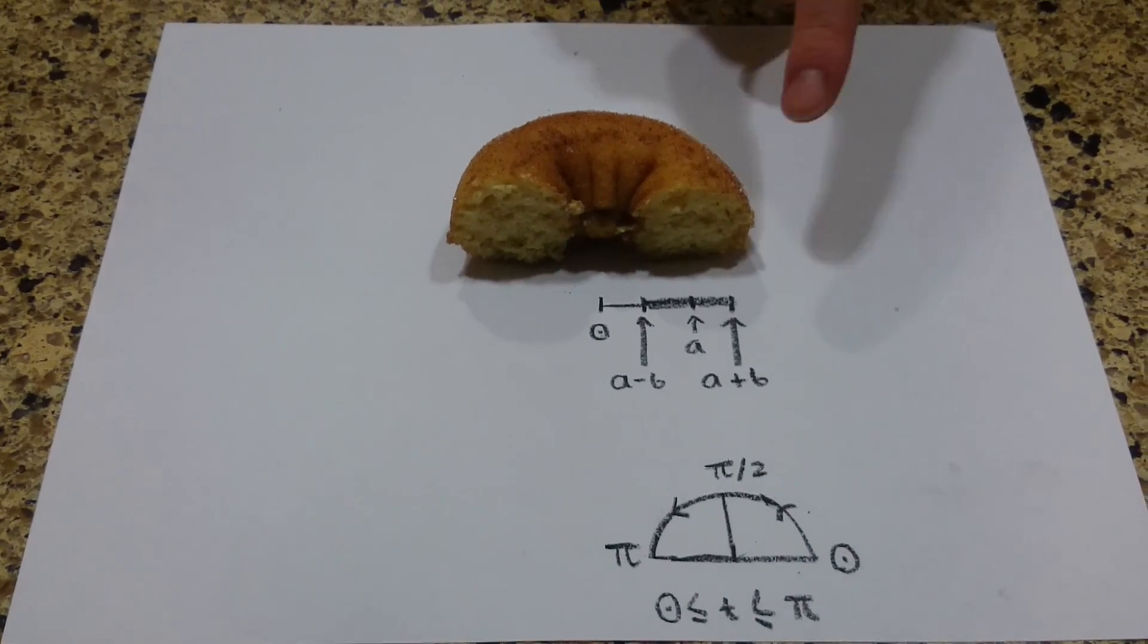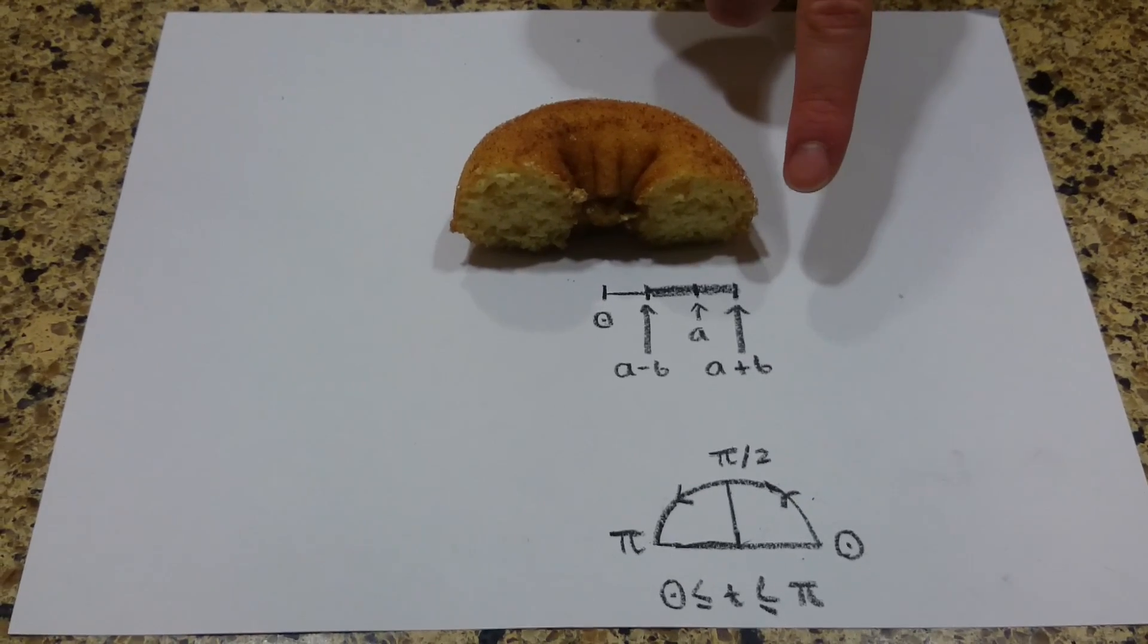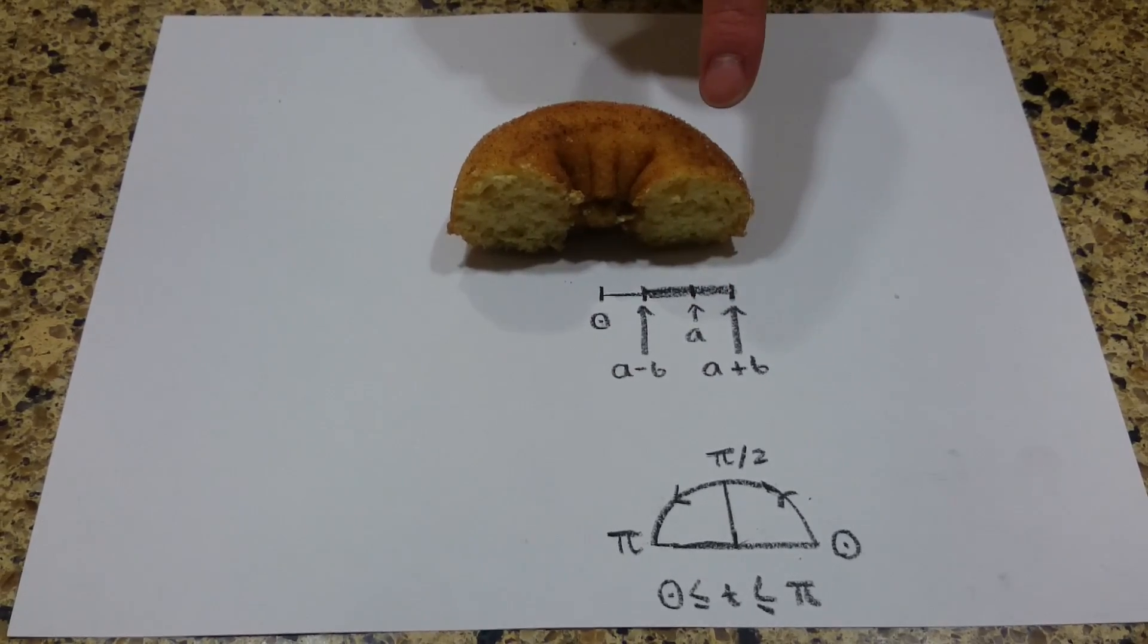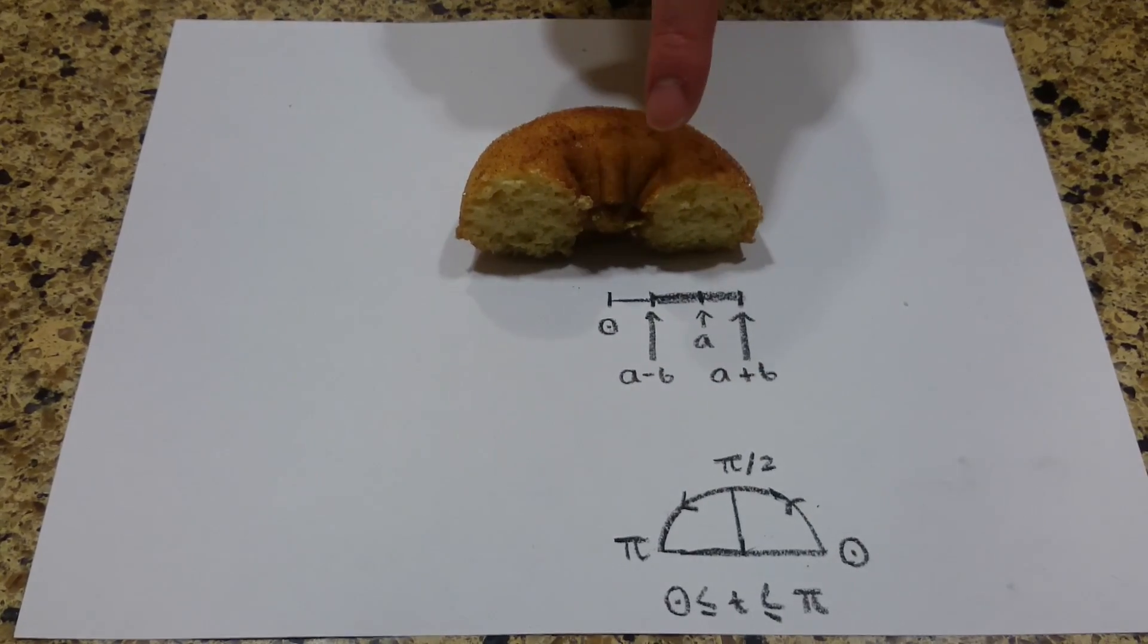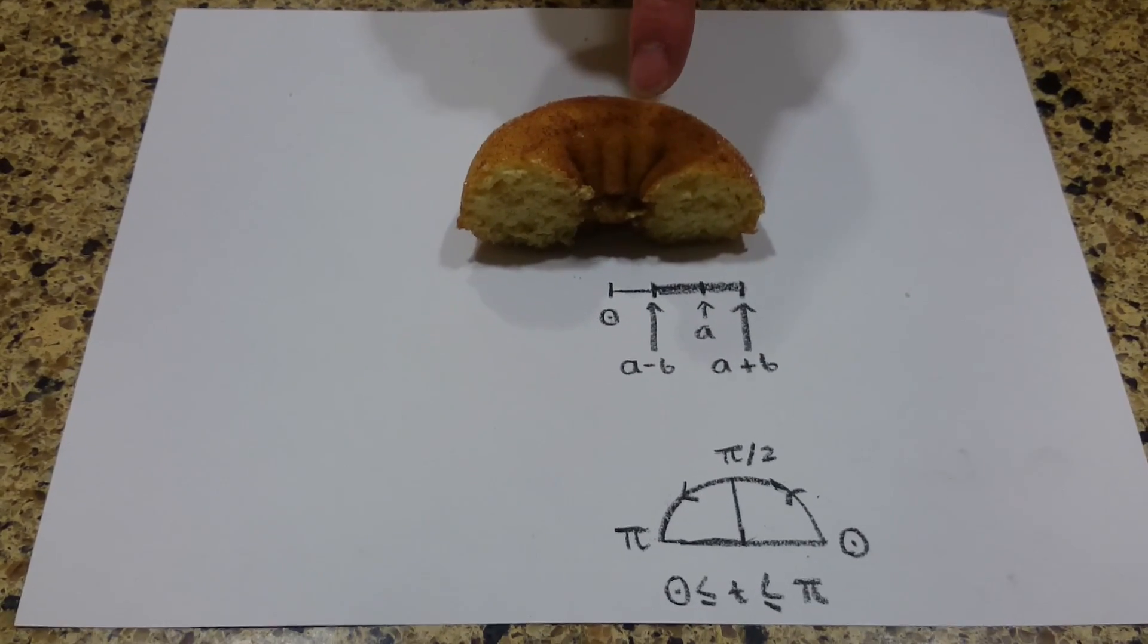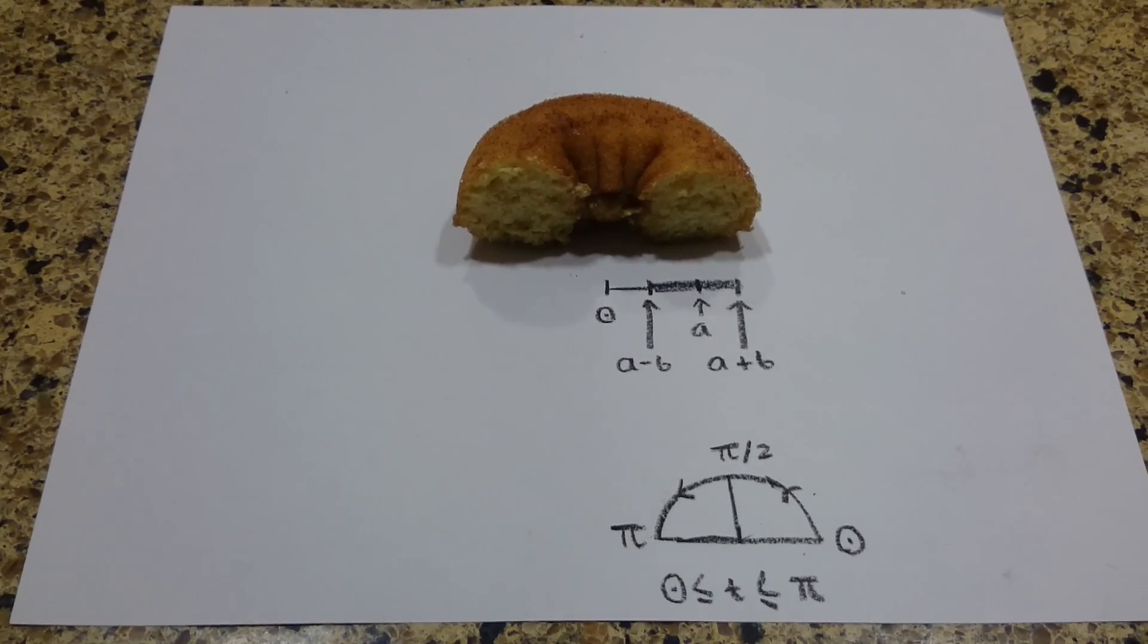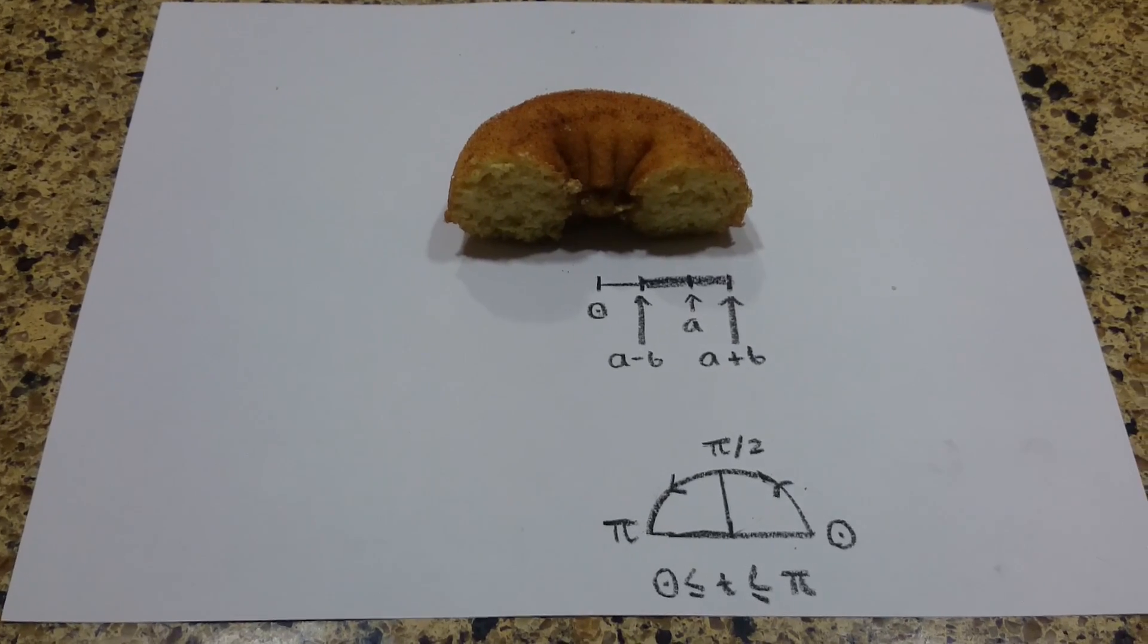We start at r equals a plus b when t equals 0. But as t increases to π over 2, r decreases to a. When t equals π, we are at the minimum, r equals a minus b. We need a function that gives us 1 at t equals 0, 0 at t equals π over 2, and minus 1 at t equals π.